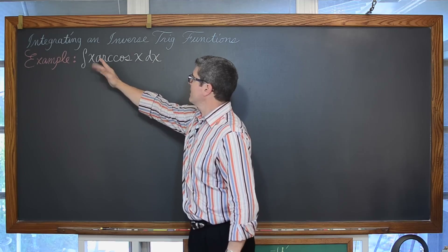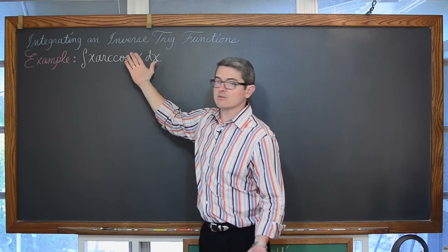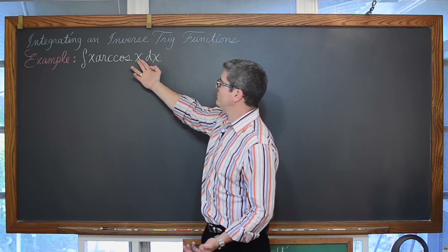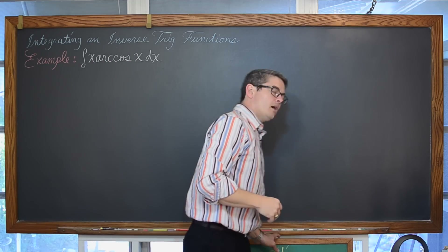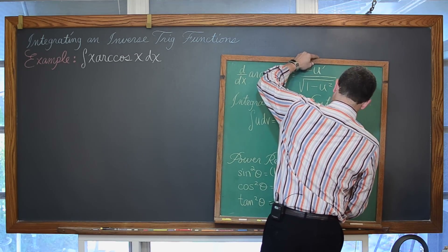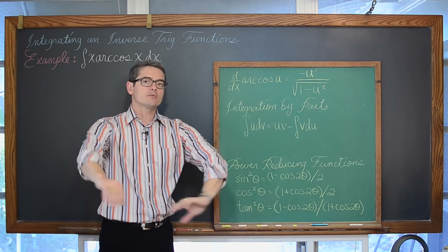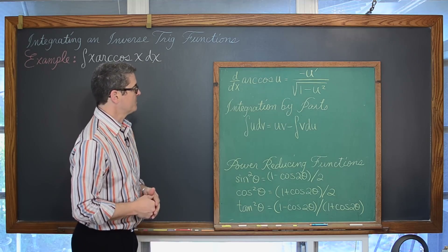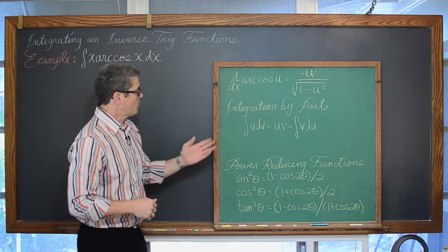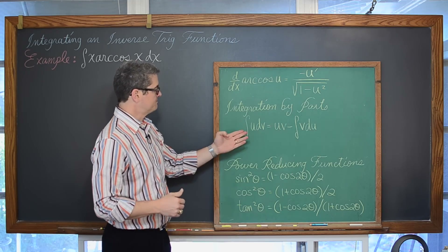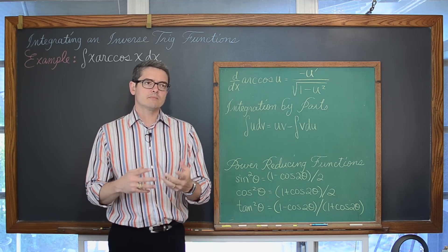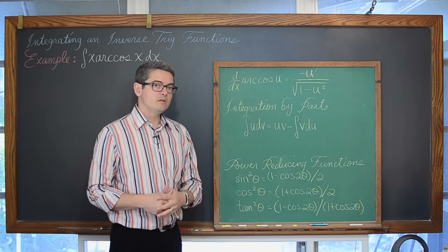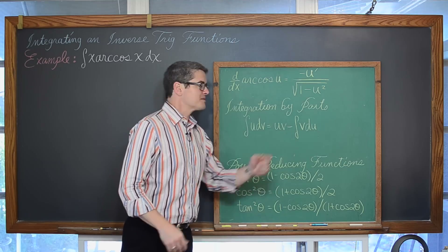Our integrand has two factors. It is the product of x and the arc cosine of x. Maybe we have some kind of u prime and u situation here, but that just isn't going to work. What we are going to have to do is remember that the derivative of arc cosine of u is negative u prime over the square root of 1 minus u squared. We are going to use integration by parts, where we identify the most complicated factor we can integrate using a basic formula, and another factor whose derivative gives something simpler. The indefinite integral of u dv equals uv minus the indefinite integral of v du.